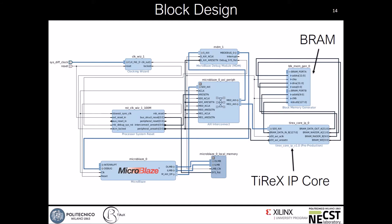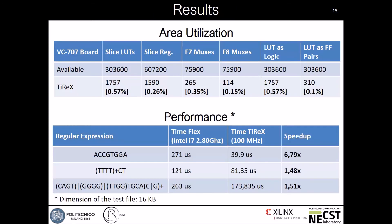The idea is to have the possibility to instantiate multiple Tyrex IP cores, each with its own BRAM, in order to have the tiled architecture controlled by the host — in this case the MicroBlaze.